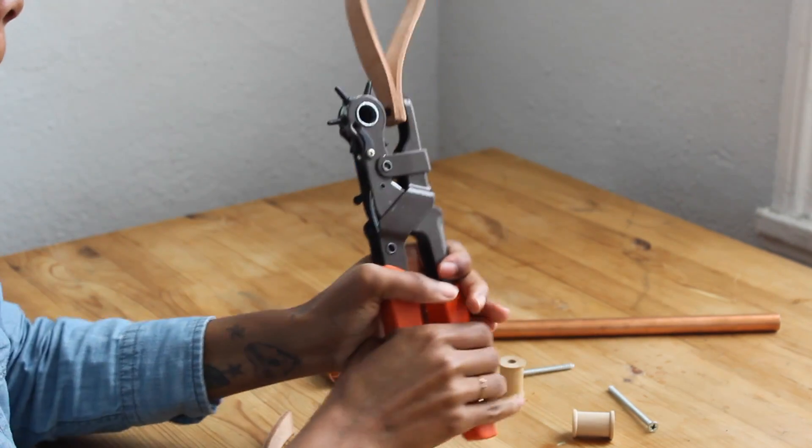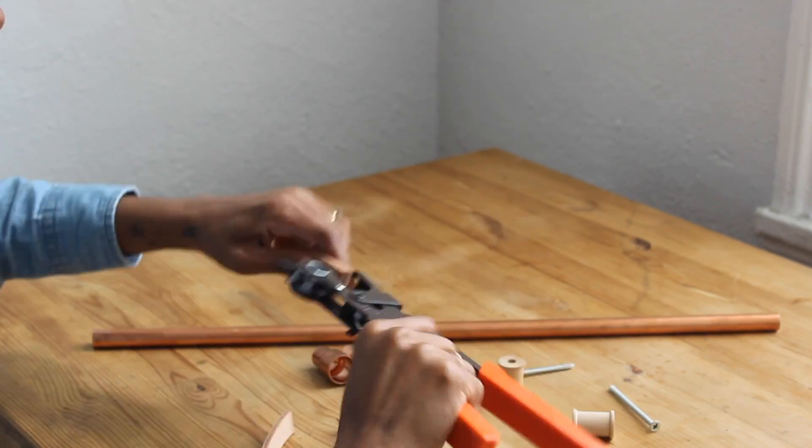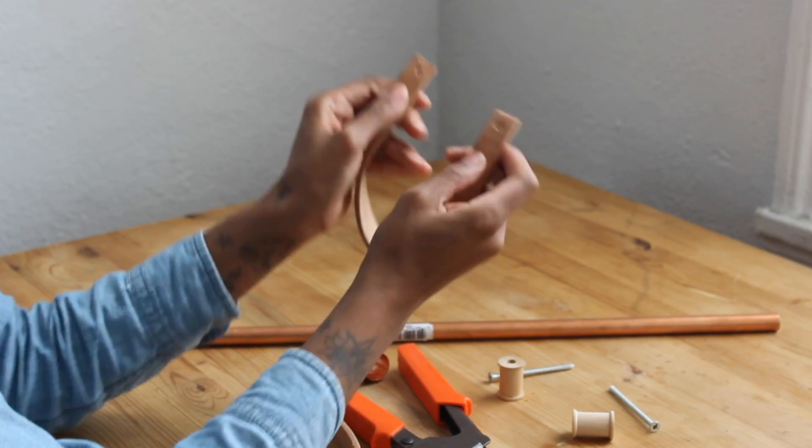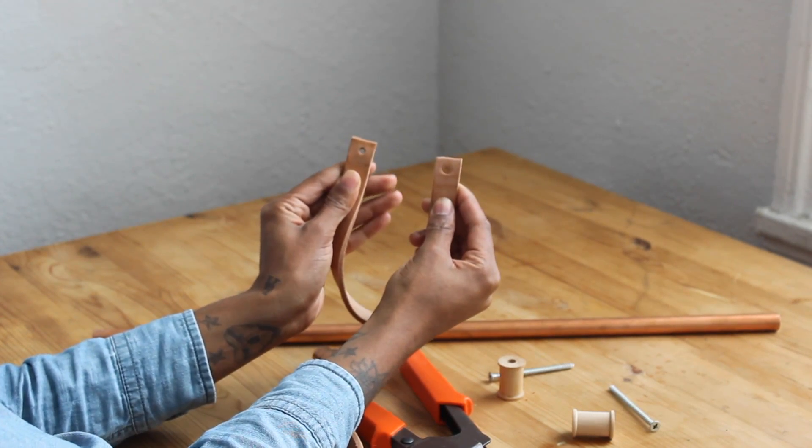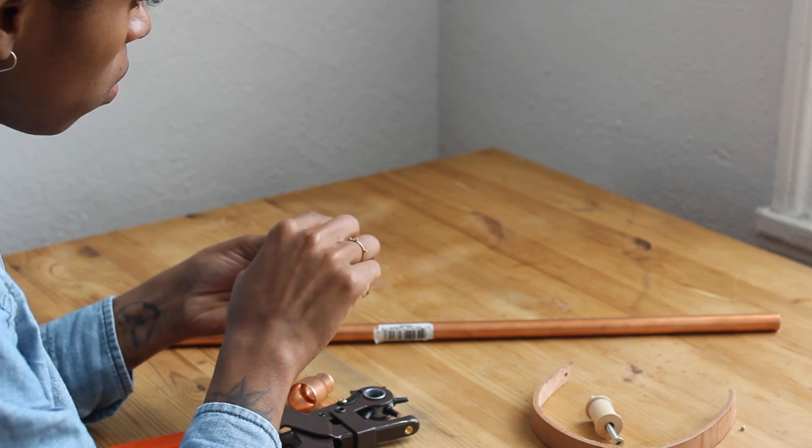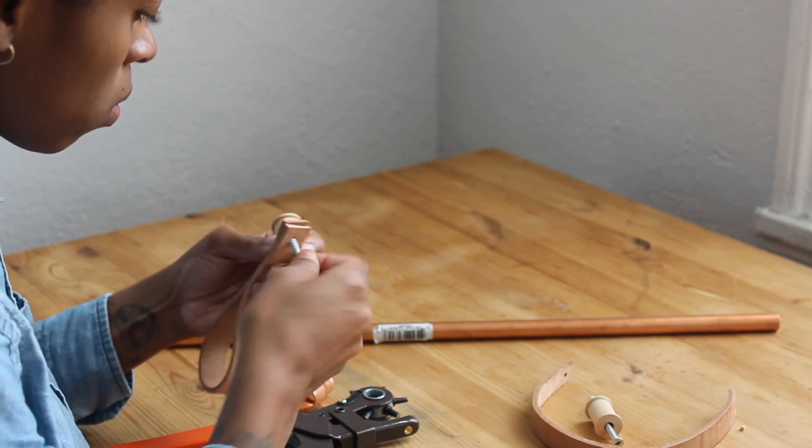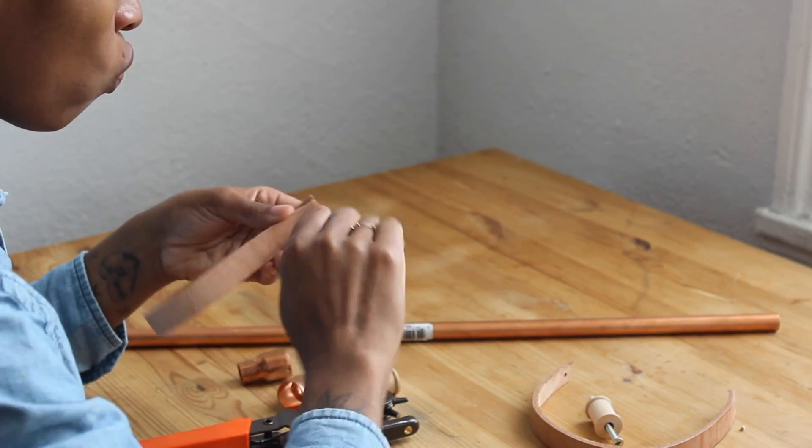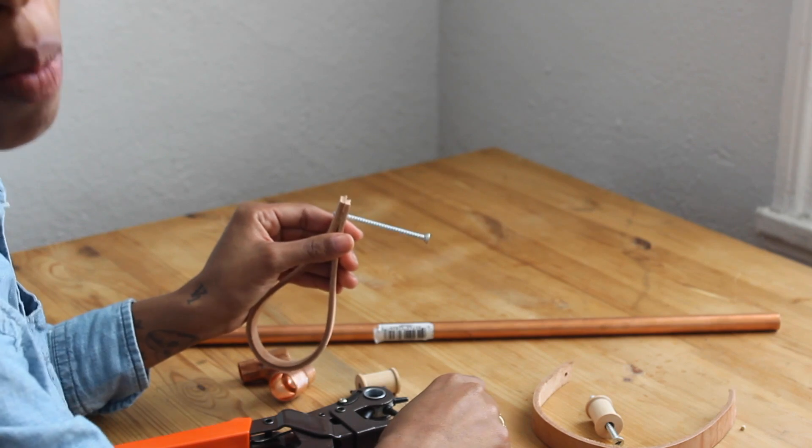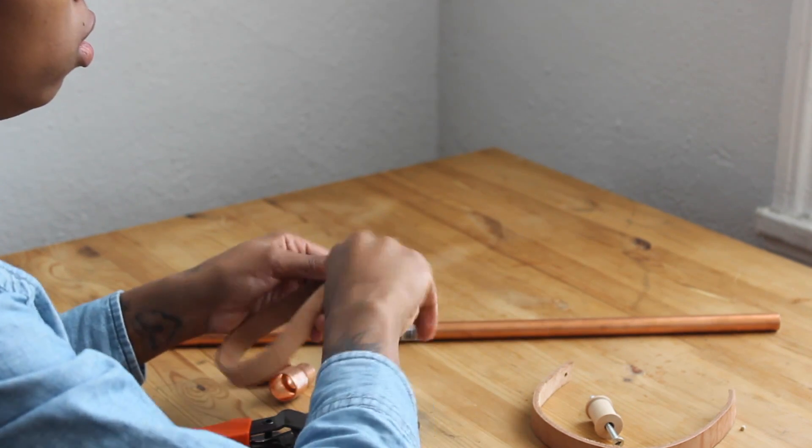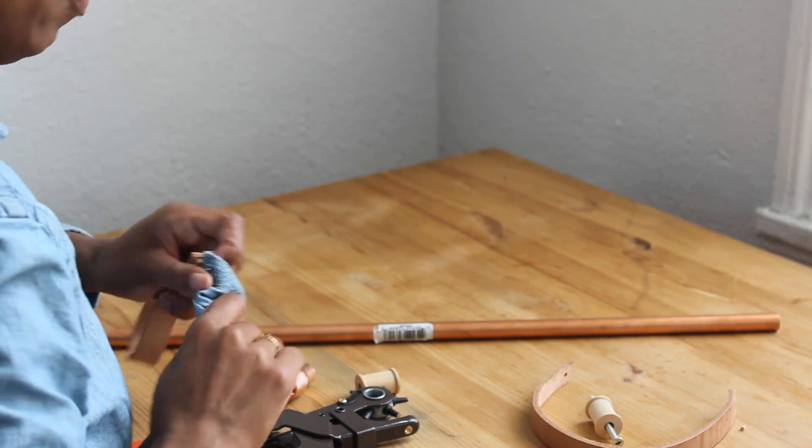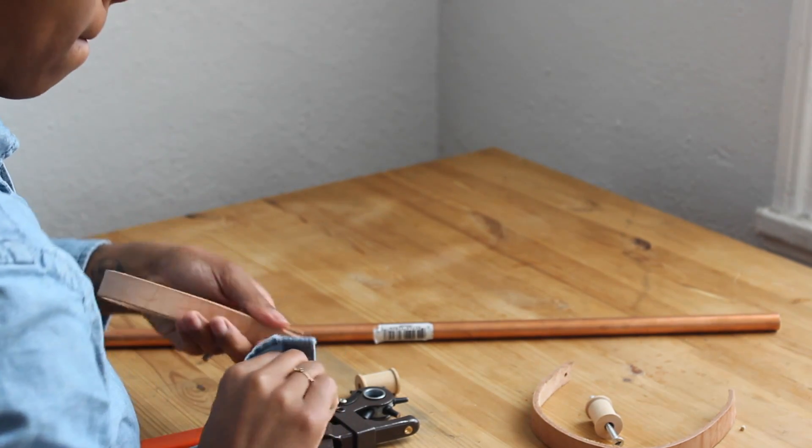So now I have two perfect holes. Now I'm just testing to see if this is the right hole size, just screwing the screw through the two holes. And sure enough, it's too darn small.